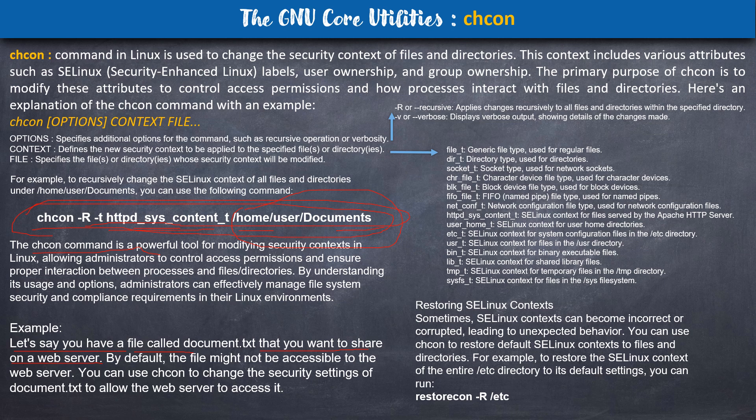The different contexts that are available include: file_t (generic file type), dir_t (directory type), socket type, and change directory type. These are the different contexts which can be implemented on a file or a directory in order to change the context of the file.